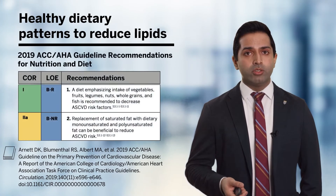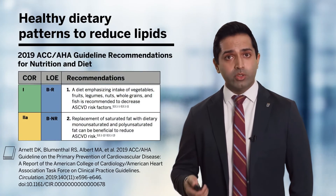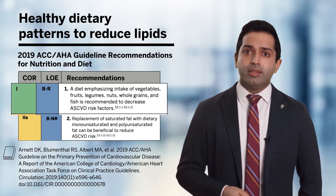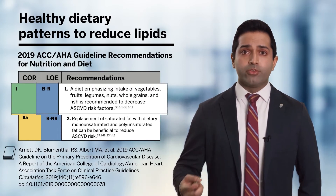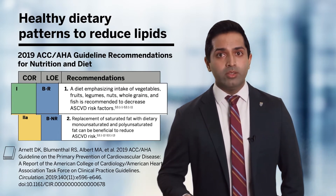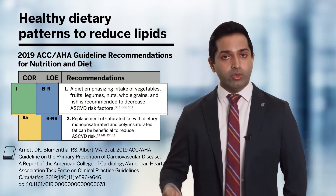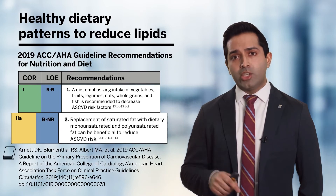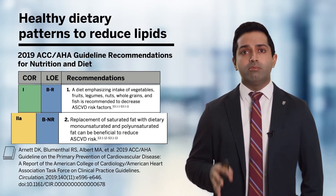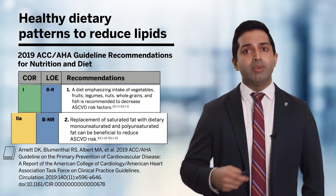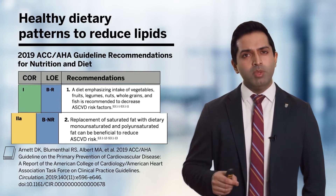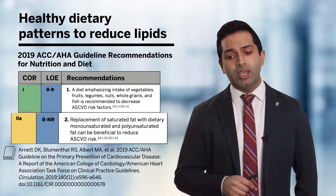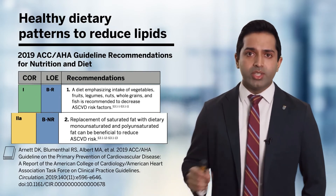When we look at the recommendations for a healthy dietary pattern to reduce blood lipids, it unsurprisingly recommends a diet rich in vegetables, fruits, legumes, whole grains, and fish to reduce risk of atherosclerotic cardiovascular disease, as well as replacement of saturated fats with dietary monounsaturated and polyunsaturated fats. It should be noted that this is a diet specifically designed to reduce cardiovascular disease, and is not necessarily a weight loss diet per se.